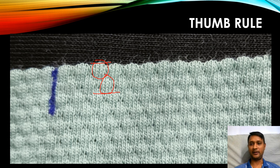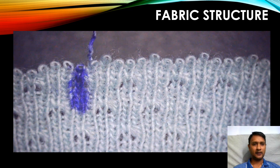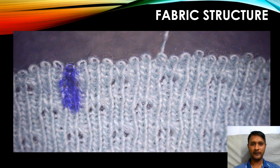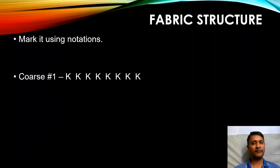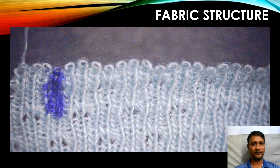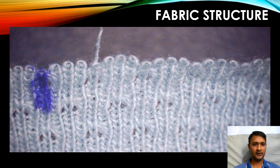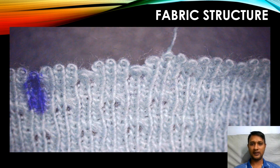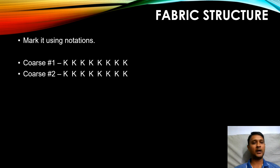Let's unravel course number one. After that vertical line, the complete loop is getting unraveled from each and every needle. With our usual notation technique, we mark course number one as knit knit knit knit knit — it's an all-knit course. Let's unravel course number two. After that vertical line, the same as course number one — the complete loop is getting unraveled from each and every needle.